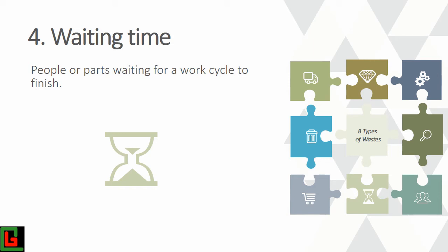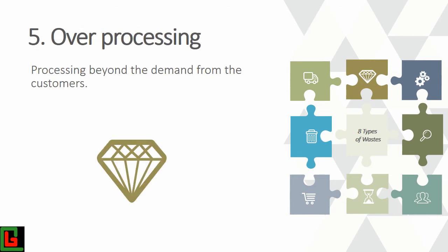The fifth type of waste is over-processing — doing something the customer is not expecting, doesn't need, or doesn't care about. Anything you do for which the customer is not willing to pay is over-processing. To avoid it, listen to the voice of your customer. This is sometimes called gold plating.